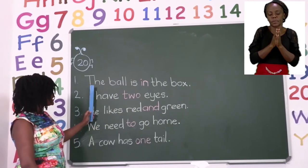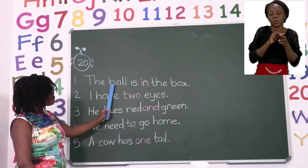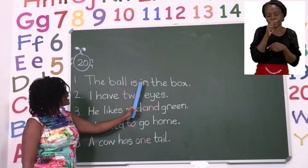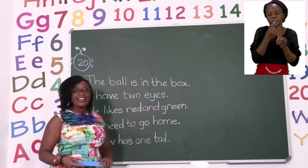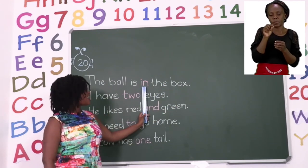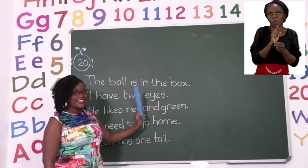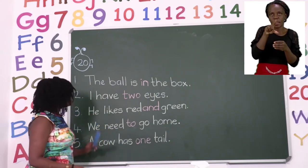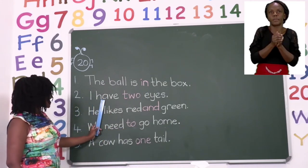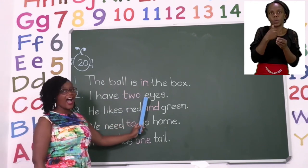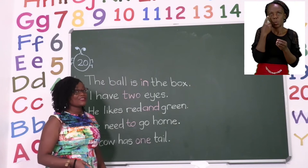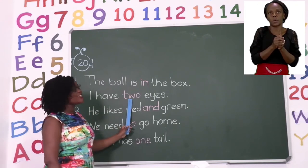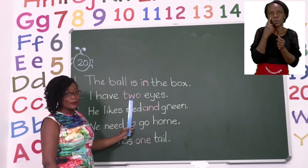The first sentence says, the ball is in the box. So I have used the sight word in. The next one says, I have two eyes. As you can see the sight word that I have used is two. The number two.